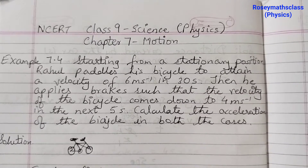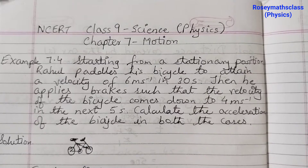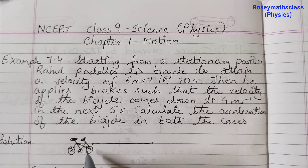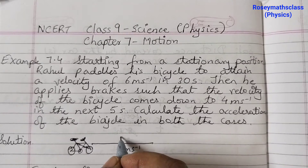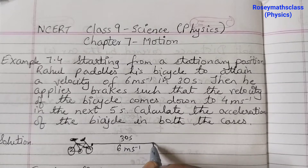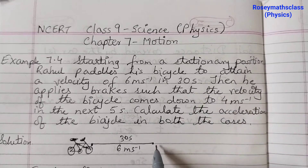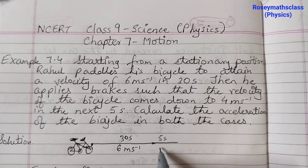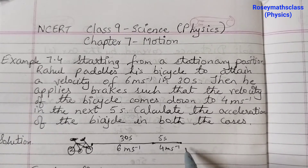This bicycle is in a stationary position — that means it is just standing there, it is at rest. Rahul paddles his bicycle to attain a velocity of 6 meters per second, and that is in 30 seconds. So the bicycle is at rest, then it moves with a velocity of 6 meters per second in 30 seconds. After reaching there, he applies brakes such that the velocity comes down to 4 meters per second in the next 5 seconds.